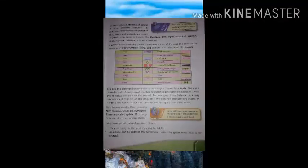All maps follow a scheme of color to show different features. For example, water bodies are shown in blue, plains and lowlands are shown in green, mountains in brown, etc. Symbols and signs represent capitals, cities, airports, railways, bridges, rivers, etc. A key to a map is usually shown in the lower corner of the map and gives us the meaning of these symbols, signs and colors. It is also called the legends. So here is a table, you go through it.